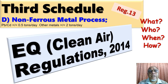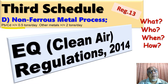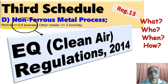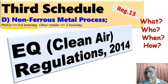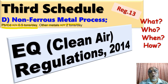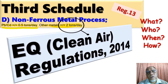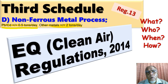We are going to look at Part D of the Third Schedule, which is non-ferrous metal process. For lead and cadmium, the manufacturing capacity is producing 0.5 tons a day or more. For other non-ferrous metals such as aluminium, chromium, zinc, nickel and tin, if they are produced in a quantity equivalent to or more than two tons per day, then they subscribe to this particular regulation, and their emission standard falls under Third Schedule Part D, non-ferrous metal process.